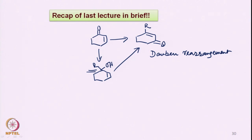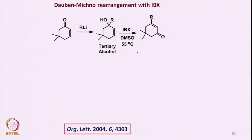If one also looks at IBX-based reactions, in 2004 someone reported a similar type of conversion using IBX in DMSO at 55°C. So one can see that we can have not only PCC but also IBX as a reagent to bring about this Dauben-Michno rearrangement.